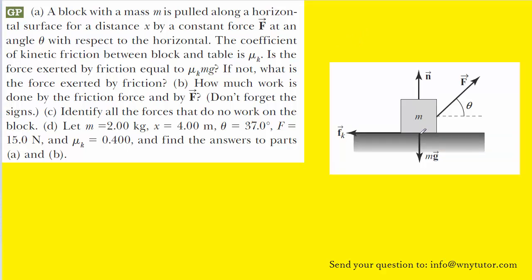We have the gravitational force acting downward on the block, the surface pushing upward on the block, which is called the normal force. We have the kinetic frictional force pointing to the left, and then we have the applied constant force, which we can label F, acting at an angle to the horizontal.